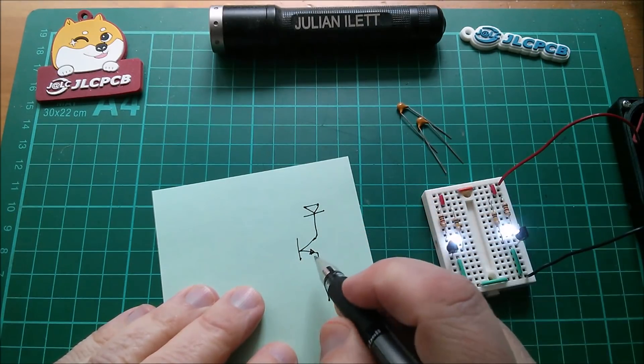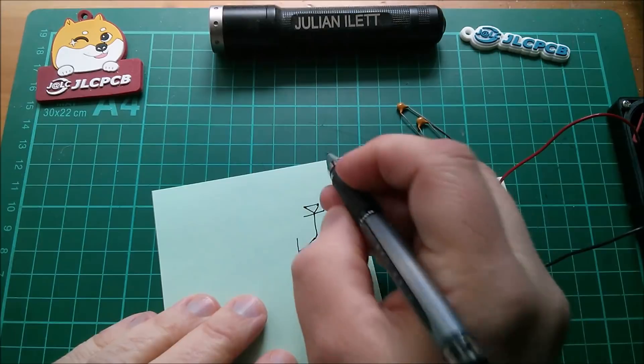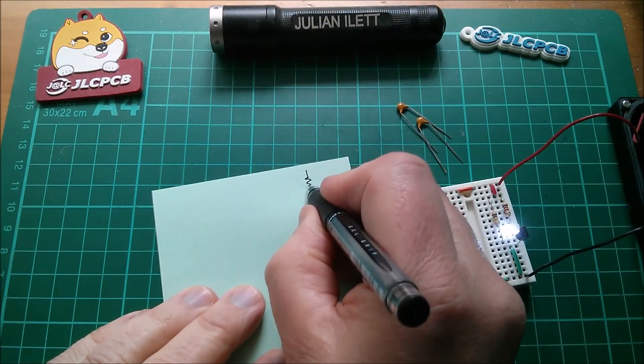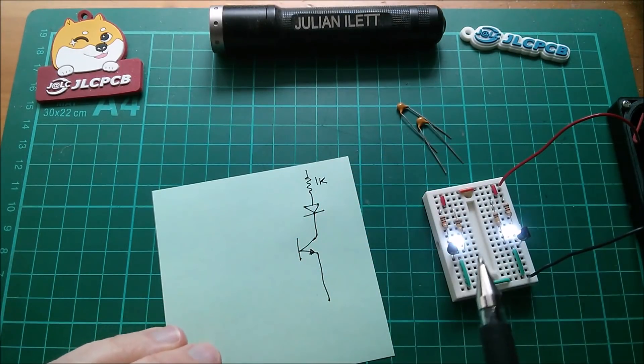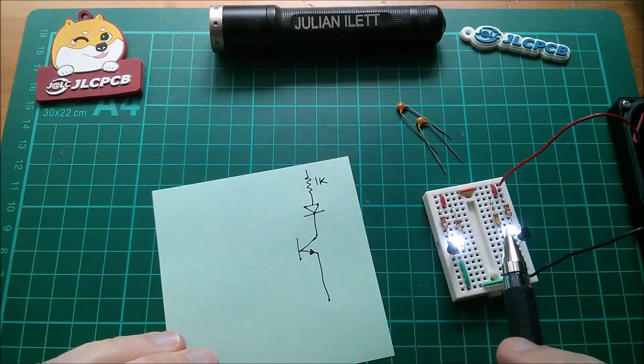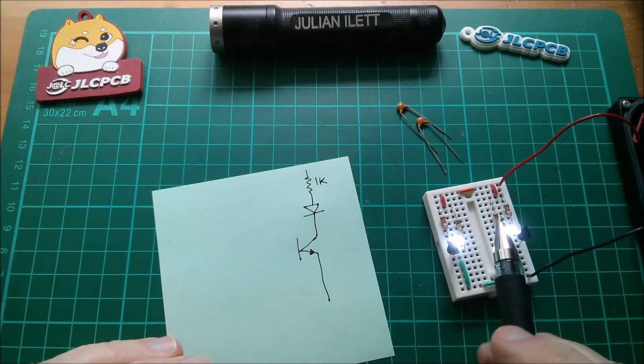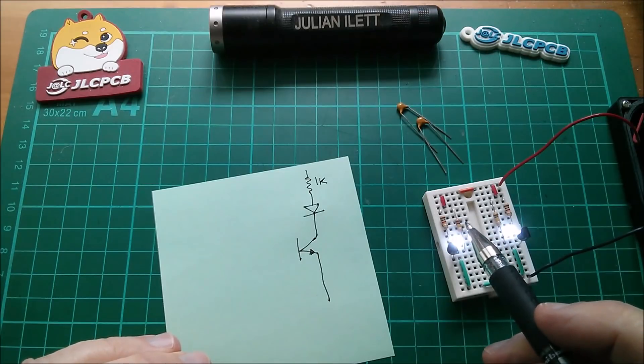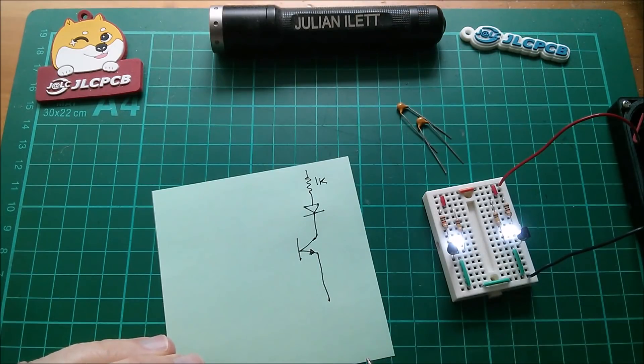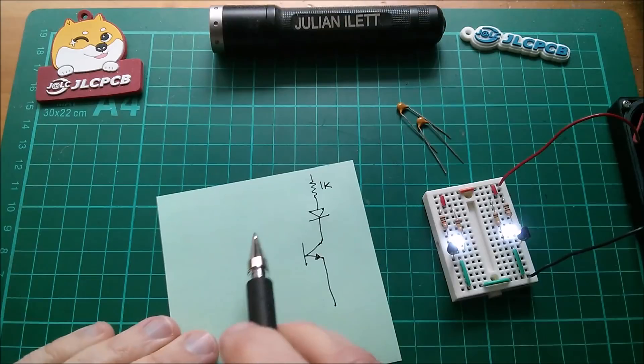And then there's the resistor, the current limiting resistor, I've put in 1K. I'm using all E1 series components. So there's only one value, 10 to the 3. And this one is 10 to the 5, 100K. So there are two of these circuits. I'll draw the other one.